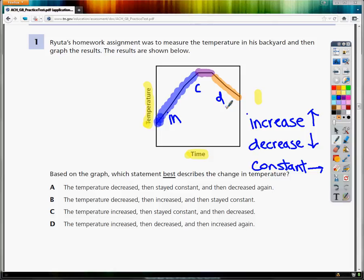B says the temperature decreased. It didn't decrease initially in the graph, so A and B are both out immediately.